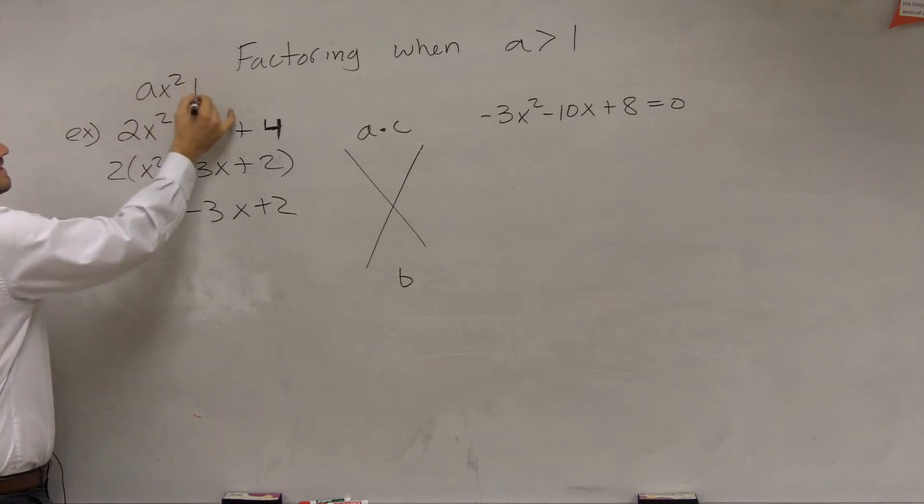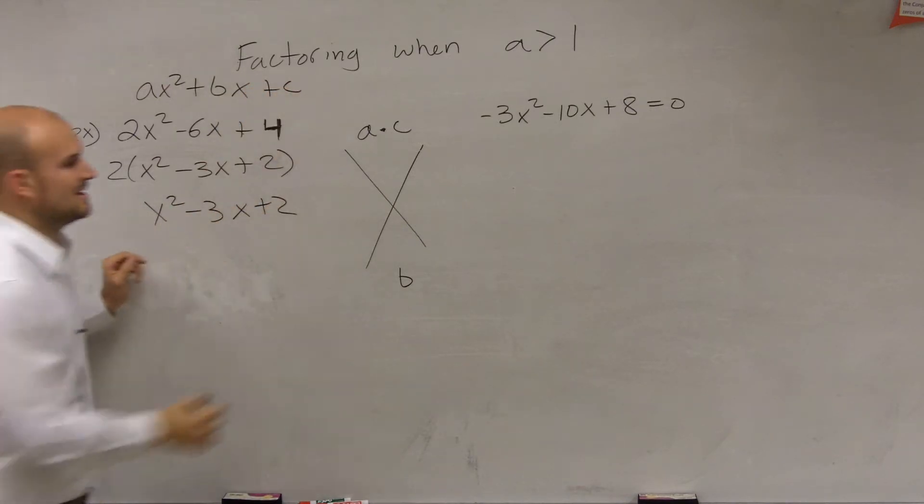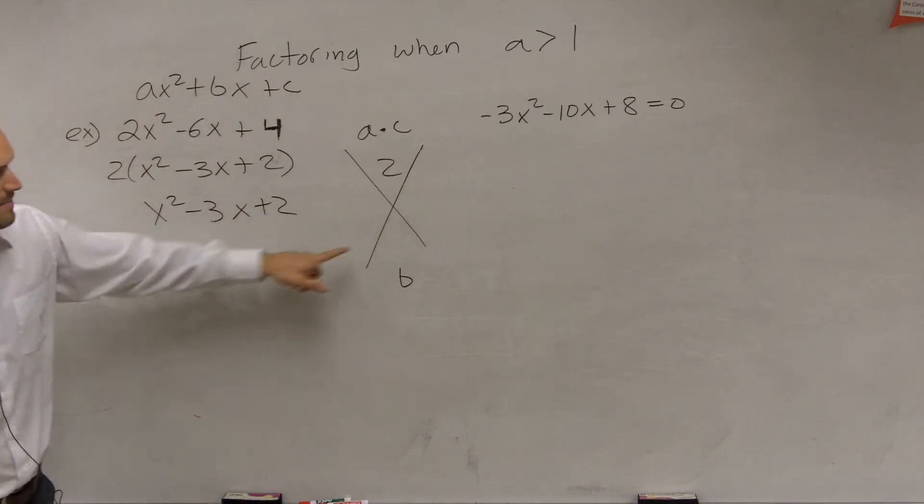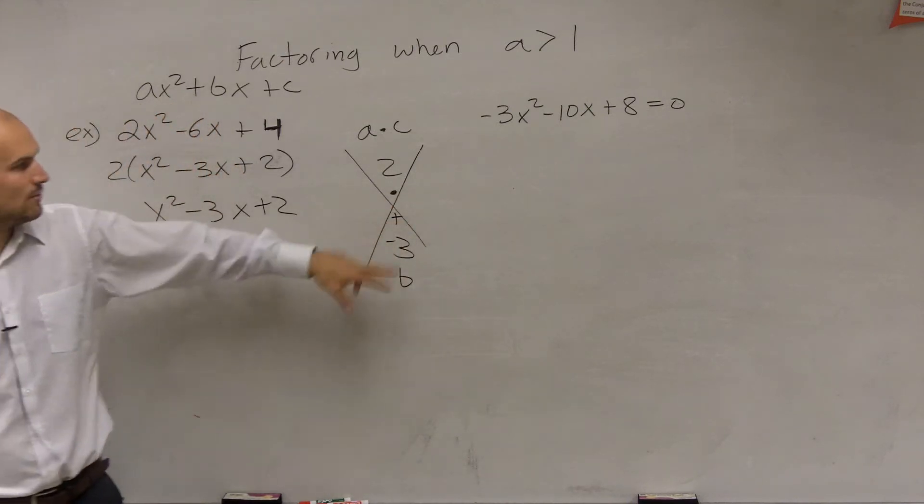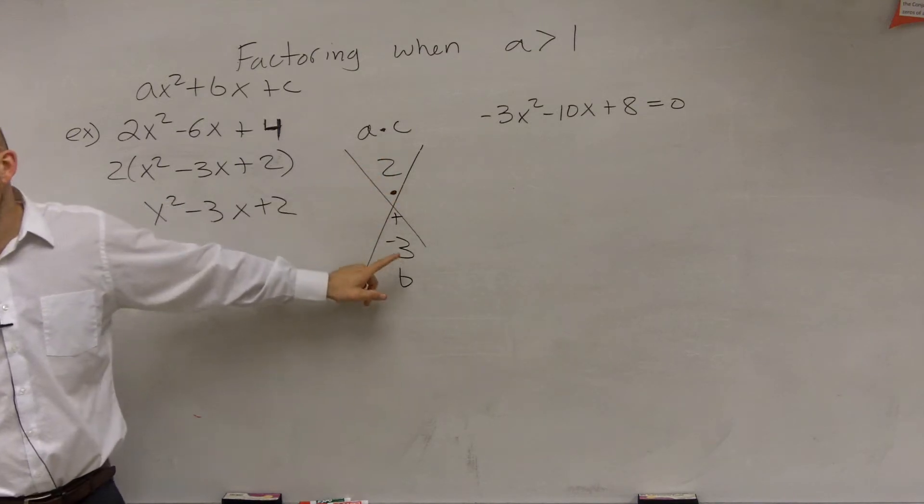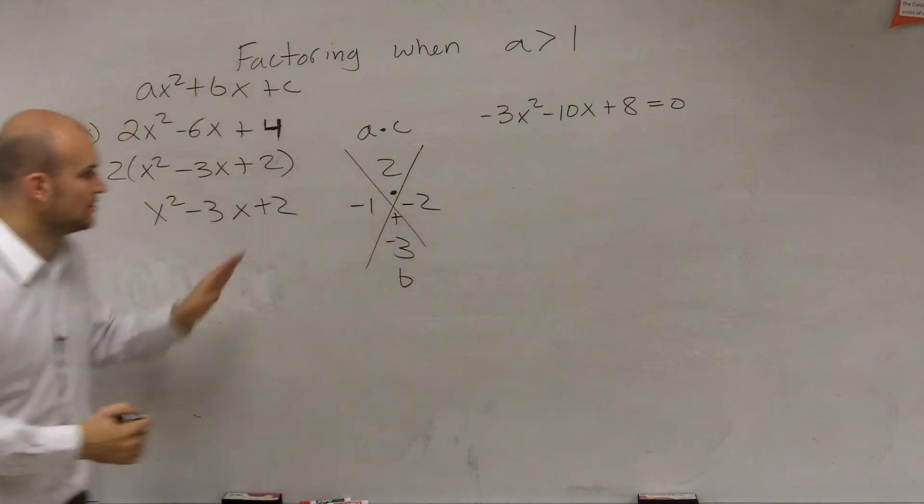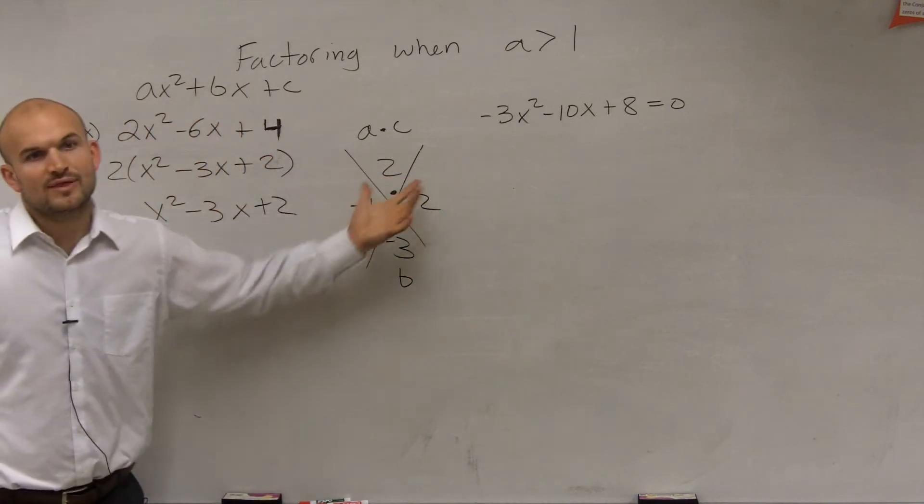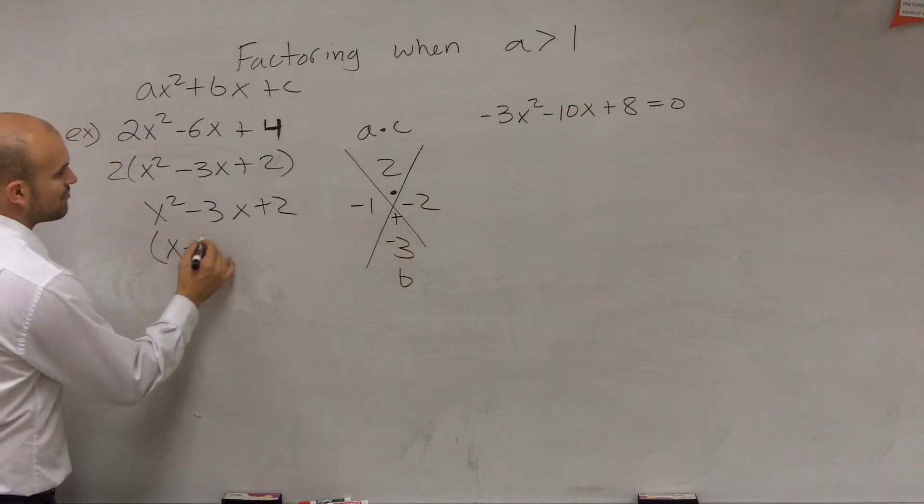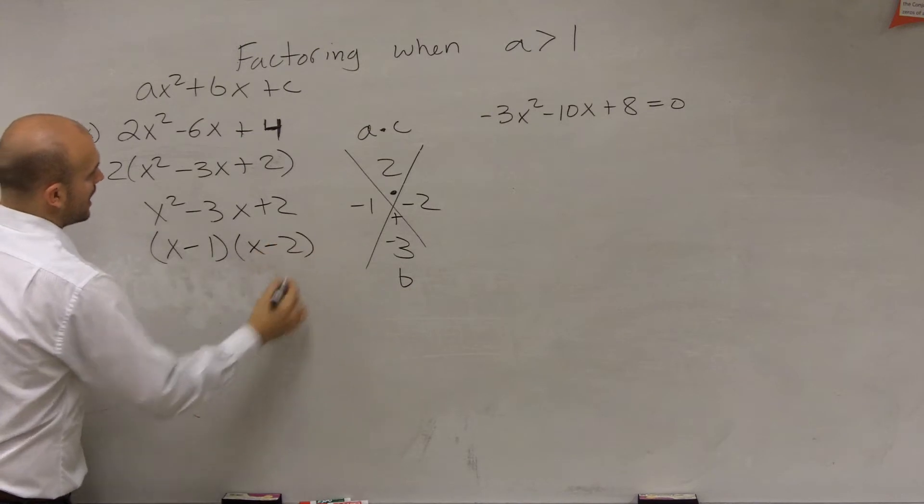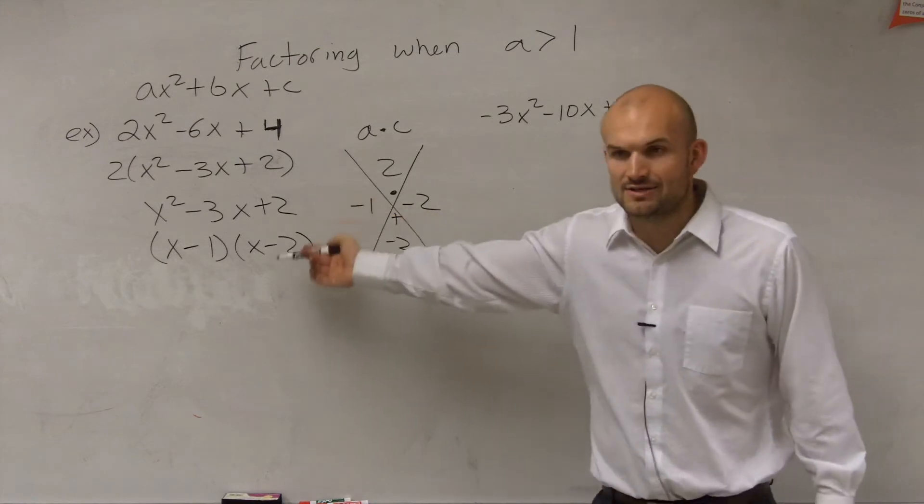Remember, everything can be formed as ax² + bx + c. So a times c in this case is 2, and b is -3. What two numbers multiply to give you 2 but add to give you -3? Right, -1 and -2. These two numbers become our factors, so we can write our trinomial as a product of its factors. This is called factoring.